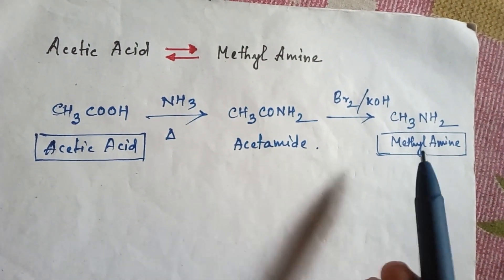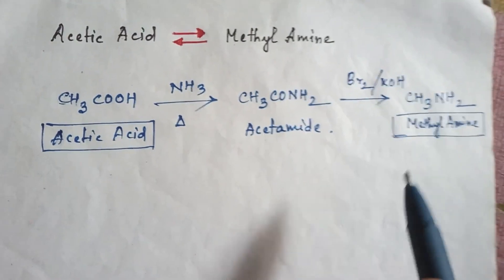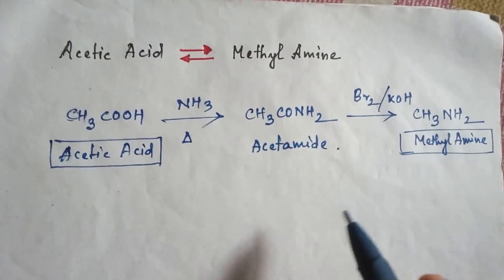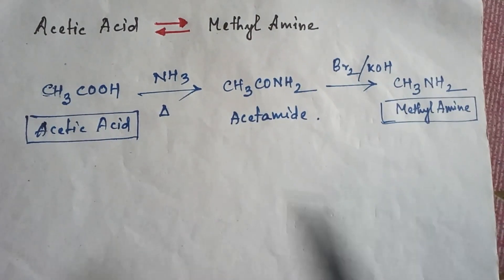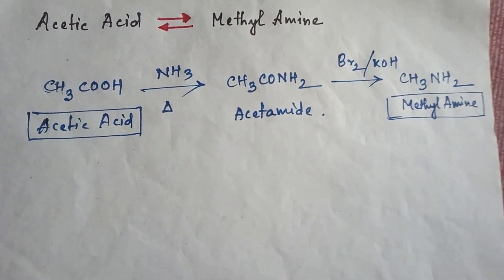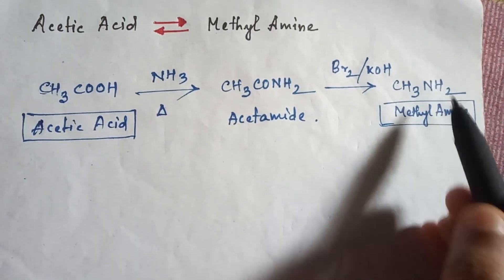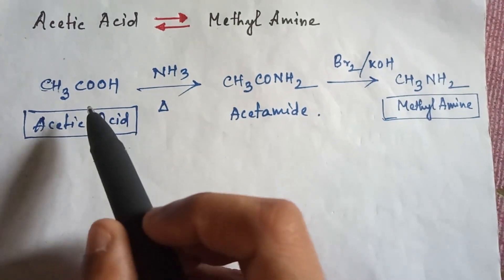So now let's talk about the reverse process, that is from methyl amine to acetic acid. You just see in methyl amine one carbon atom, and in acetic acid there are two carbon atoms, so you have to increase the number of carbon atoms.